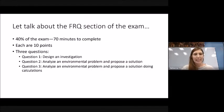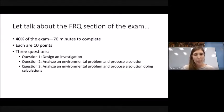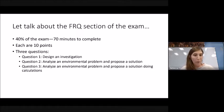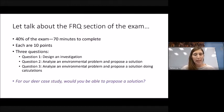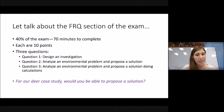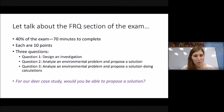Let's talk about the free response section. The free response is 40% of the exam and you get about 70 minutes. Each question is 10 points and there are three questions: one about designing an investigation, one about analyzing an environmental problem and proposing a solution, and the third is the same but also includes calculations. As we go through population information, think about how it helps you analyze an environmental problem and propose a valid solution.